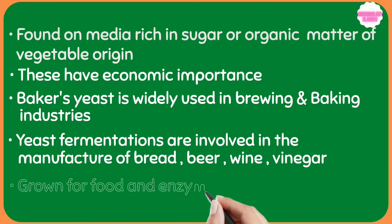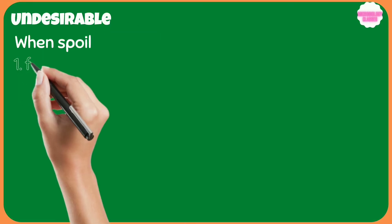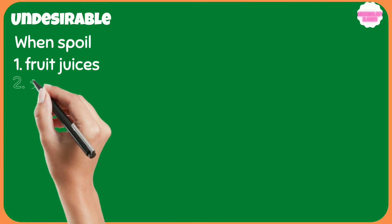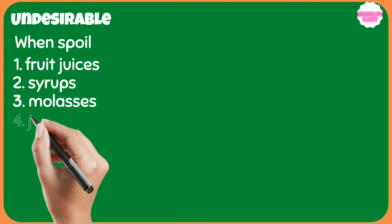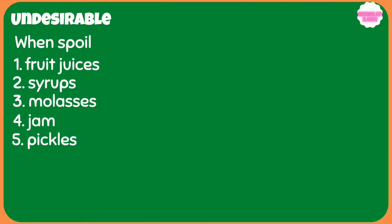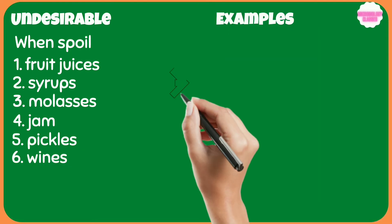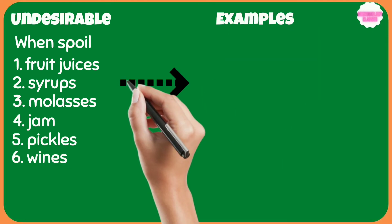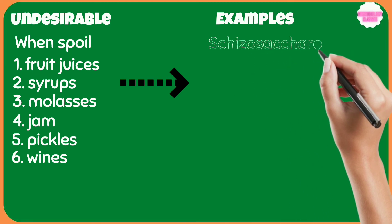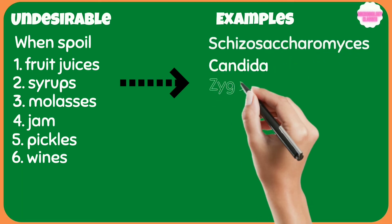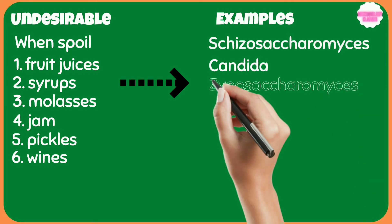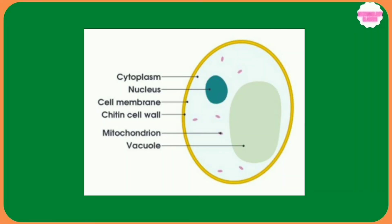Yeast are also grown for food and enzymes such as zymase. They are undesirable when they spoil fruit juices, syrups, molasses, jam, pickles, wines, beers, and other food materials. Examples of yeast include Schizosaccharomyces, Candida, and Zygosaccharomyces. The structure of yeast consists of cytoplasm, nucleus, cell membrane, chitin cell wall, and mitochondria.